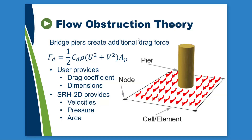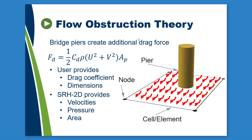When modeling with flow obstructions, SRH2D applies a drag force equation. The drag force applied to each element is calculated using C_D, the dimensionless drag coefficient that represents the shape of the object; A_P, the below-water cross-sectional area of the obstruction projected normal to the direction of the approaching flow; rho, water density; and U and V, velocity components. By providing the pier dimensions, SRH2D can calculate the drag force of the obstruction and artificially increase the roughness values at the impacted element or elements.